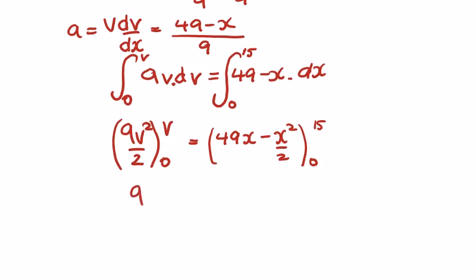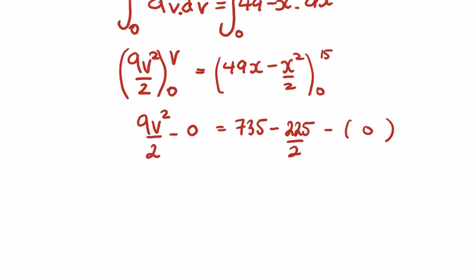We're going to get 9v squared over 2 on the left minus 0 equals 49 by 15, that's 735, minus 15 squared is 225. If I multiply by 2, I'll get 9v squared equals 1470 minus 225. So all of this over 9 will equal v squared.